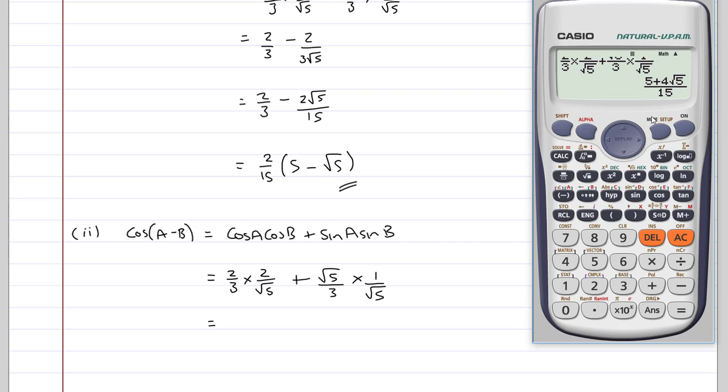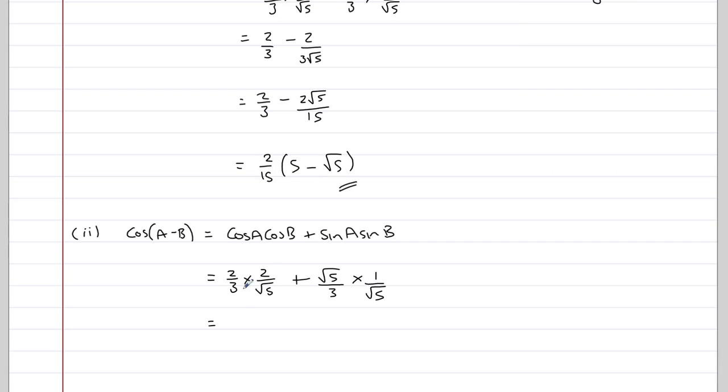which is 5 plus 4 root 5 over 15. Well, 5 over 15 is a third, so I end up with a third plus 4 fifteenths of root 5.